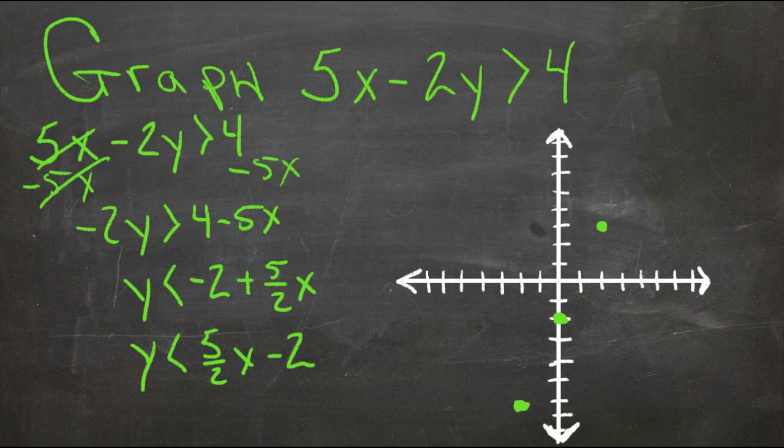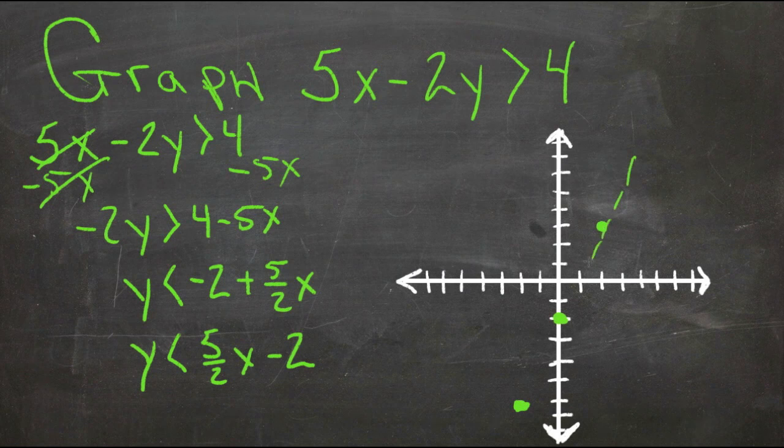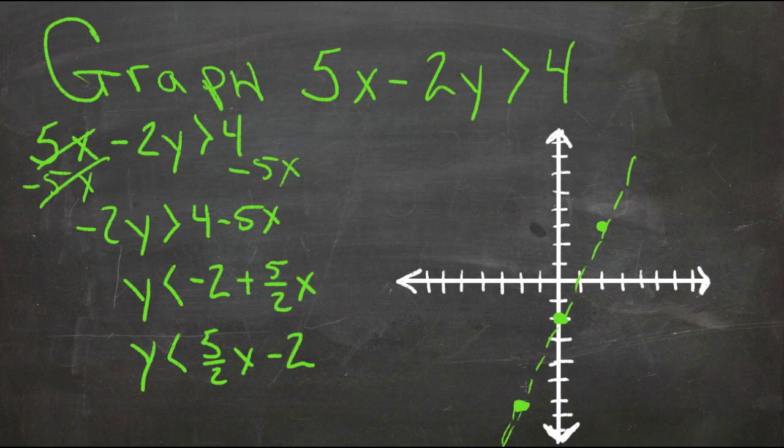Now here, this one's a little different than the last one, because this is greater than or less than—there's no equal to. So when we draw this line, we need to draw it dashed. There we go, so we have a dashed line.